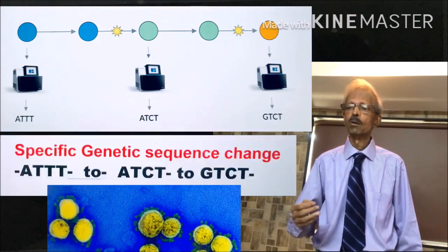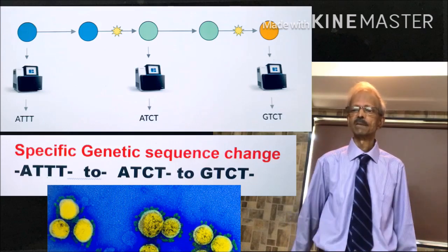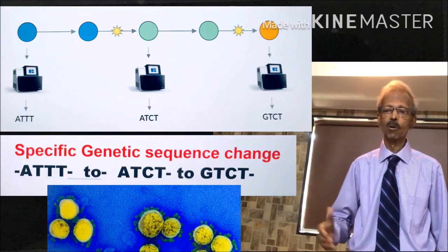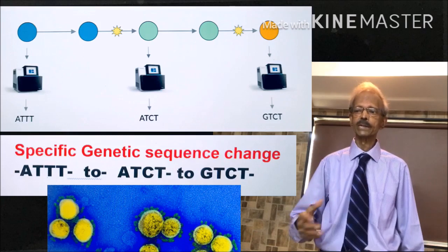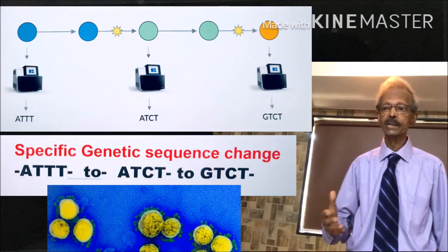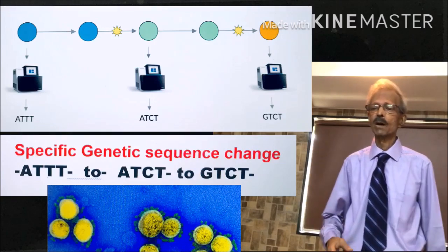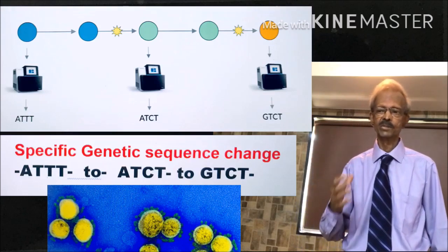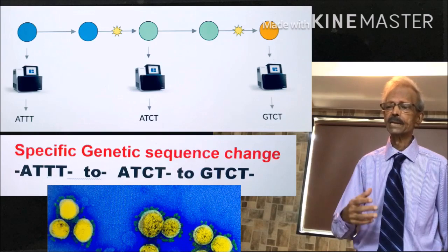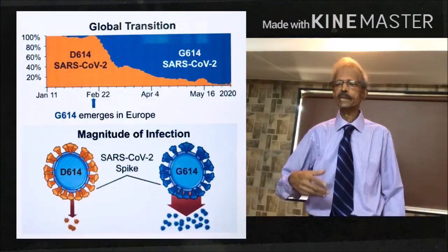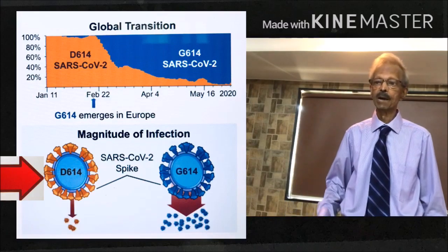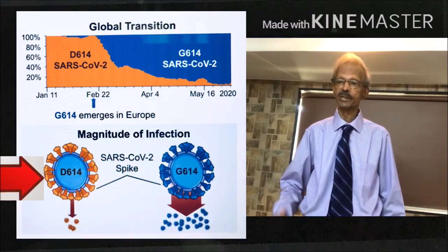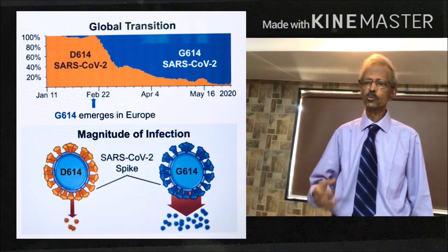See the variations of mutations from the gene segment ATTT — adenine thymine thymine thymine — to ATCT, that is adenine thymine cytosine thymine, and next converted to GTCT, that is guanine thymine cytosine thymine. It seems the earlier version of coronavirus D614, which originated in Wuhan city of China in the month of November, was more toxic and lethal.